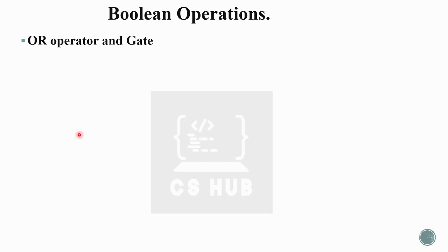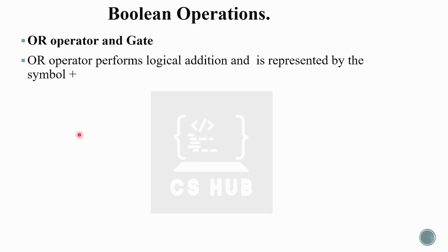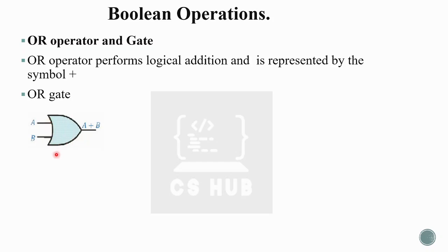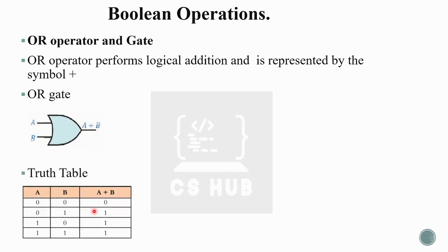The OR gate corresponds to the OR operator, which performs logical addition, represented by the plus symbol — A plus B. If the input is A and B, the output will be A plus B. We are performing a logical OR operation, so if any input is 1, the output is 1.